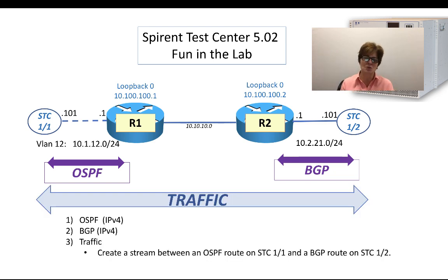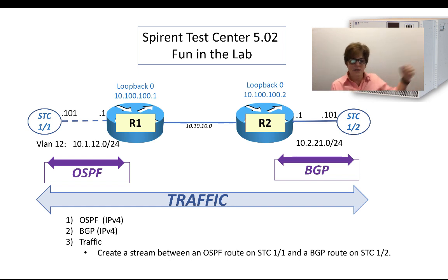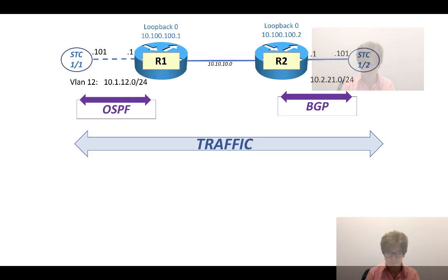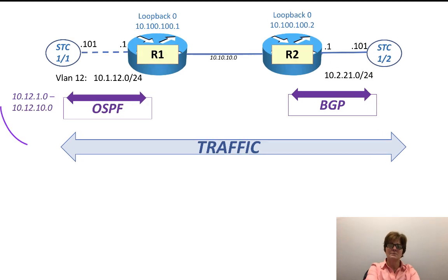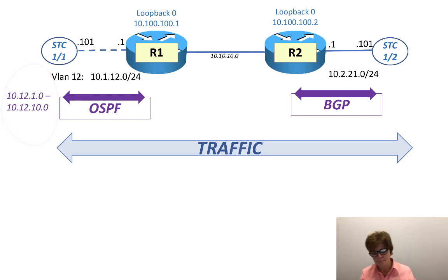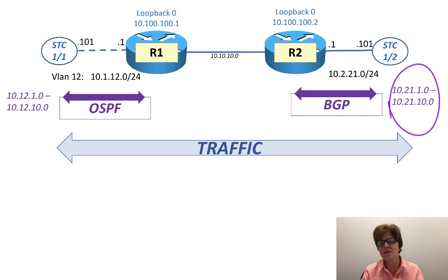What we're going to do is create a stream between OSPF route prefixes coming in from the Spirent Test Center behind the OSPF neighbor that router 1 has, talking to prefixes from the BGP neighbor that router 2 is talking to. In our other video, we had OSPF sending 10 prefixes - 10.12.1.0 through to and including 10.12.10.0 - and BGP was sending 10 prefixes - 10.21.1.0 through to and including 10.21.10.0.